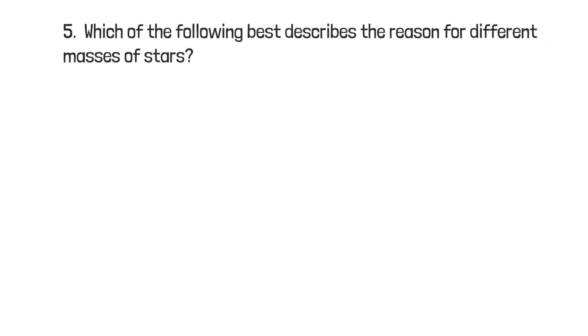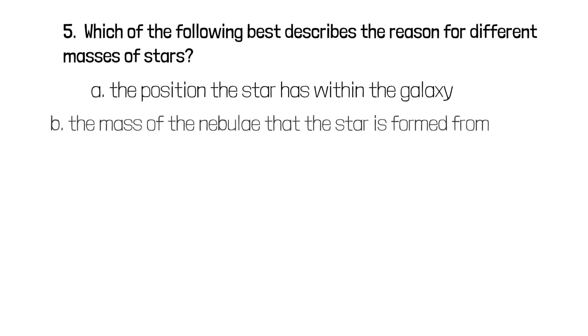Question 5: Which of the following best describes the reason for different masses of stars? Is it A the position the star has within the galaxy? Or B the mass of the nebulae that the star has formed from? The correct answer is B.